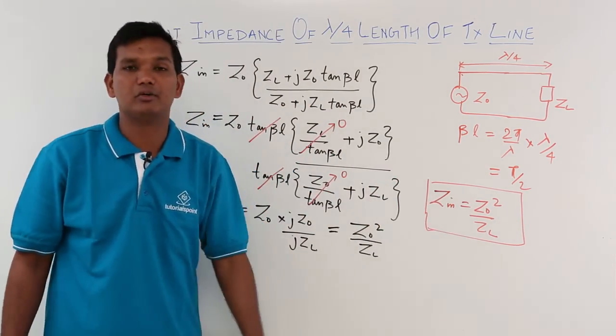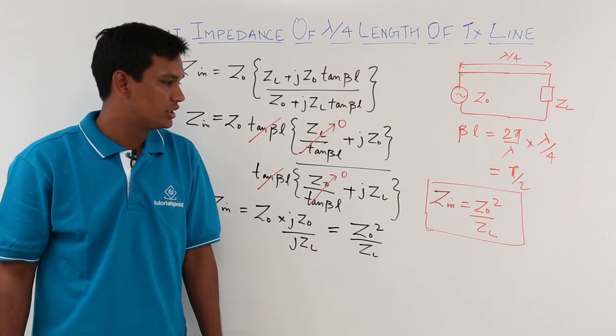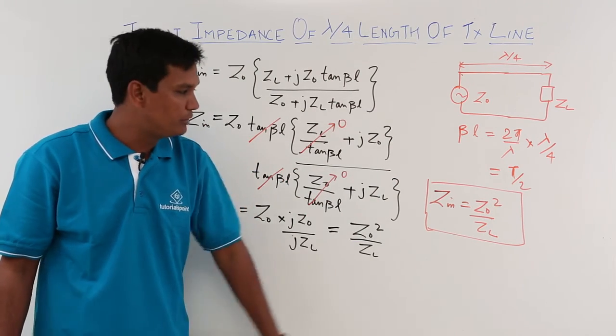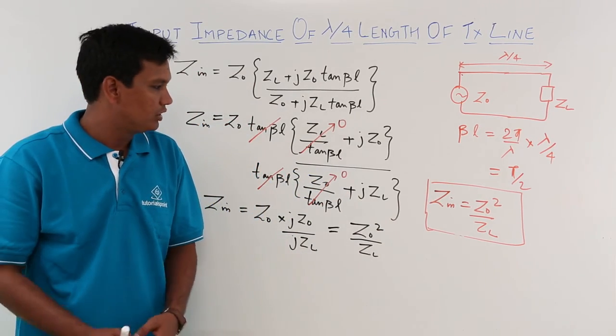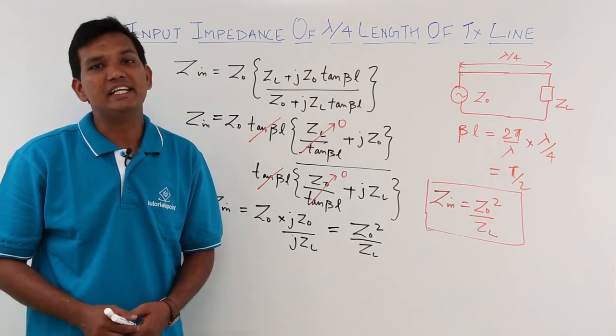We have solved this and found out zin equals z0 square by zl. We will be using this very often when solving numerical problems on this. We will see more on this in the next videos.